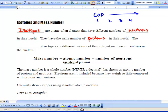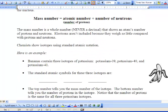So, the mass number of the isotopes are different because of the different number of neutrons in the nucleus. But the protons or the atomic number never changes. So, the mass is a whole number. It's never a decimal, and it shows the number of protons and neutrons. Electrons aren't included because they weigh so little compared to protons and neutrons.